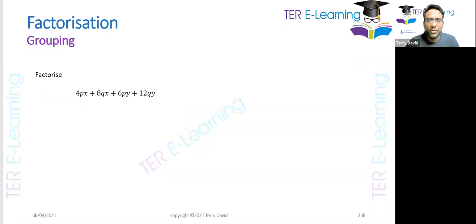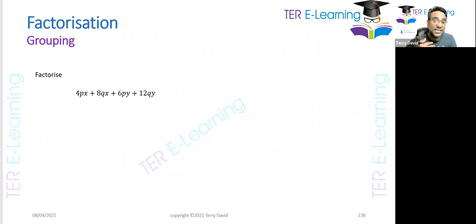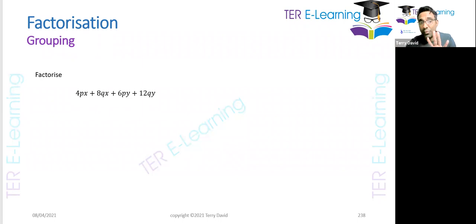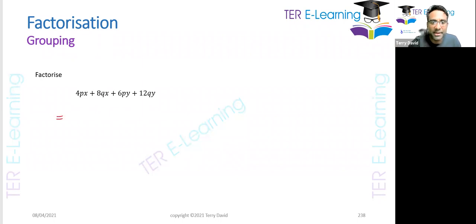In this video I'm going to be looking at how to factorize by grouping. This is different from the first two methods we looked at — factorizing using the HCF method and the difference of two squares. To identify if you need factorizing by grouping, look out for four terms. Four terms is the hint, and that's how we know to use this method.